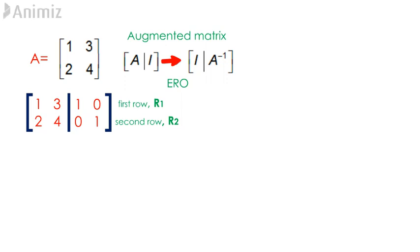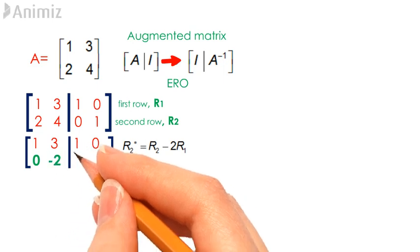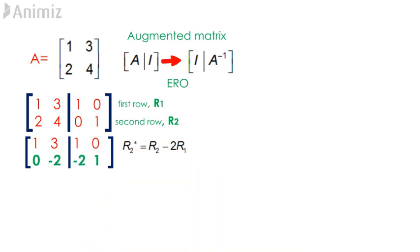In order to get our new row 2, we compute row 2 minus 2 times row 1. This gives us the elements for our new row 2: 0, negative 2, negative 2, 1. We have been able to make our 2,1th element to be 0, putting us on track to getting the identity matrix on our left.